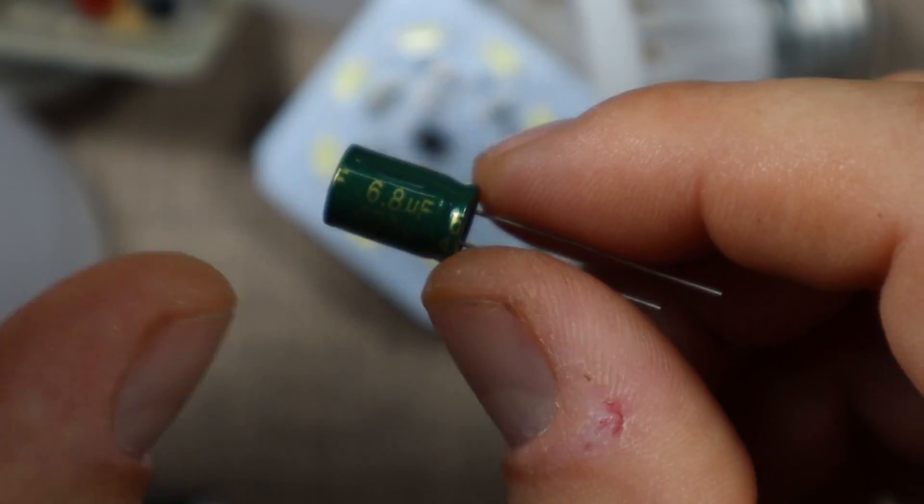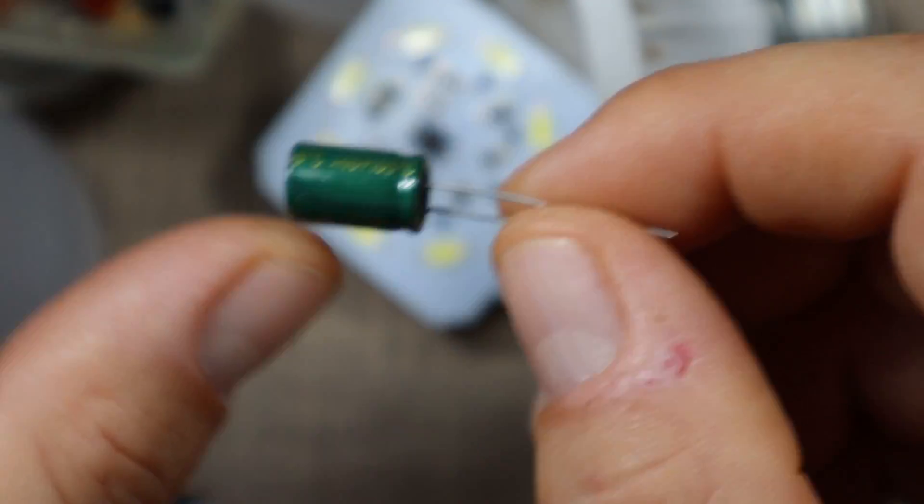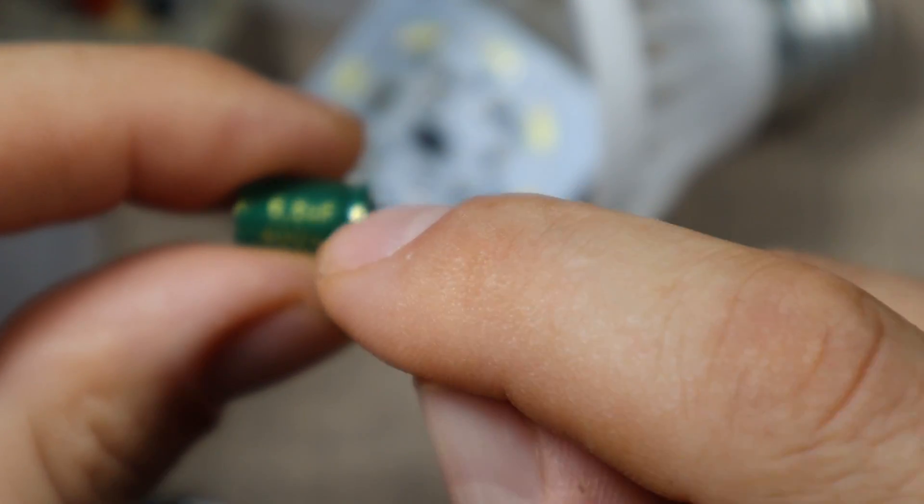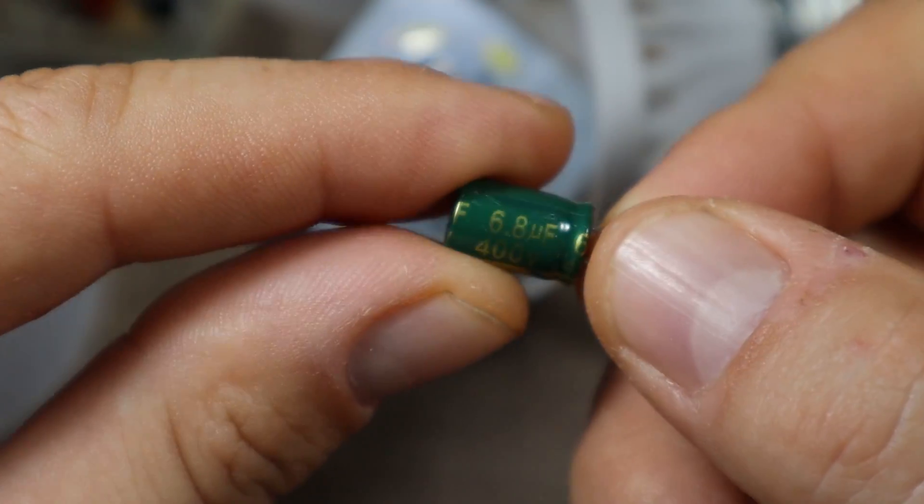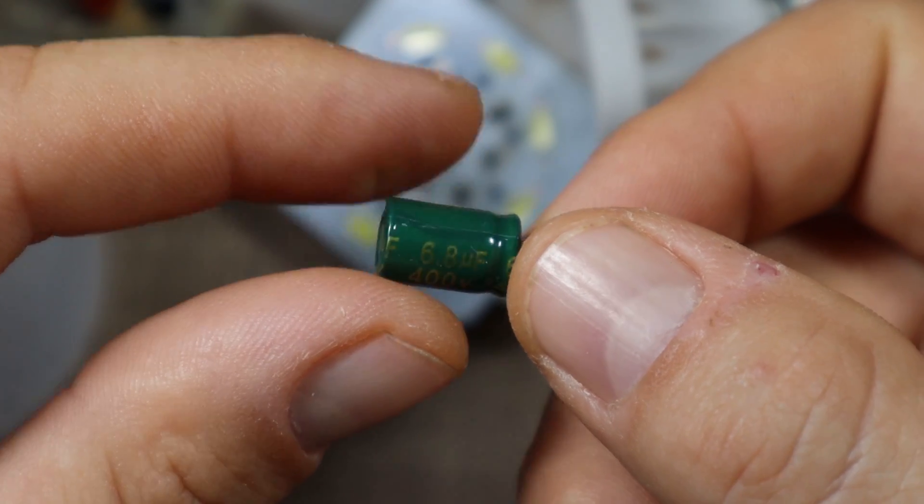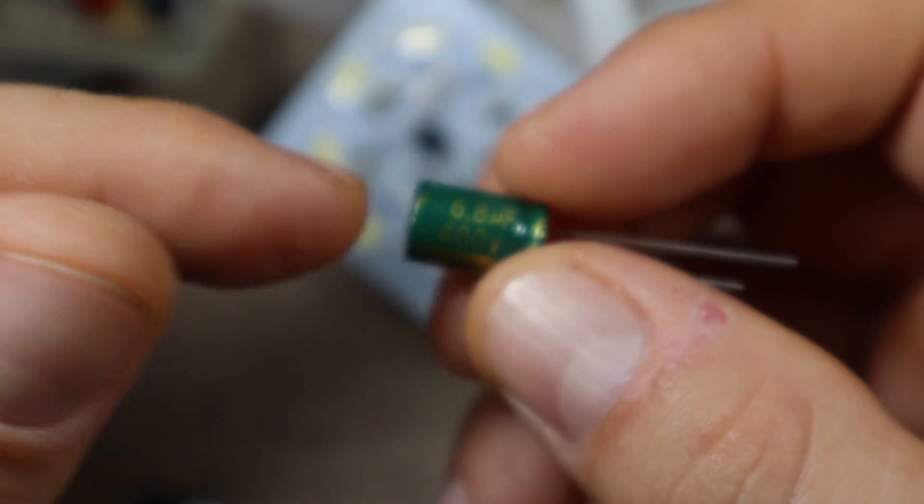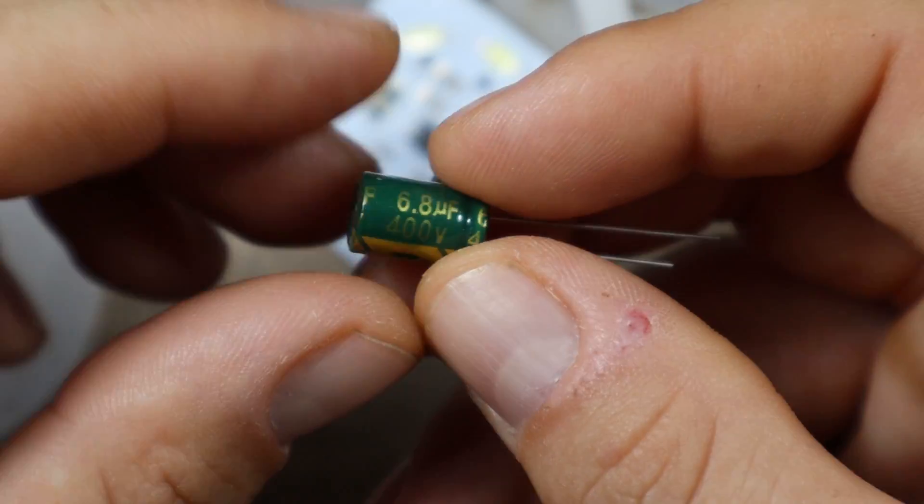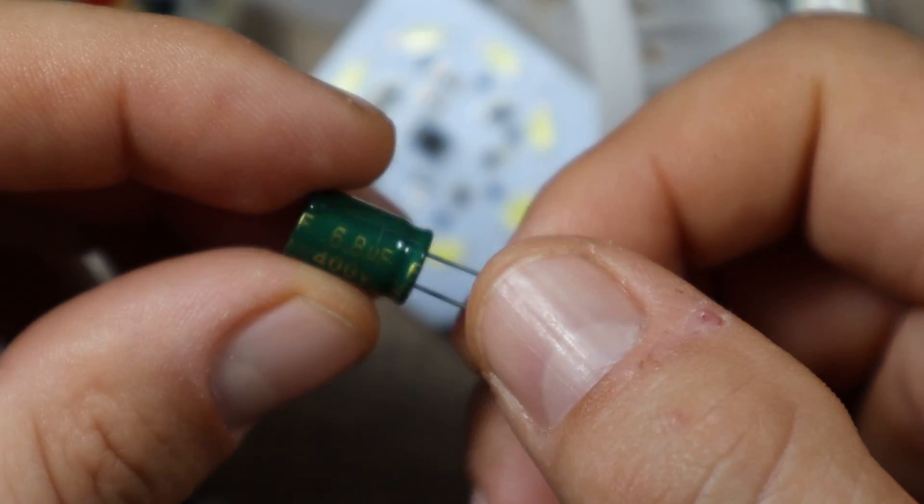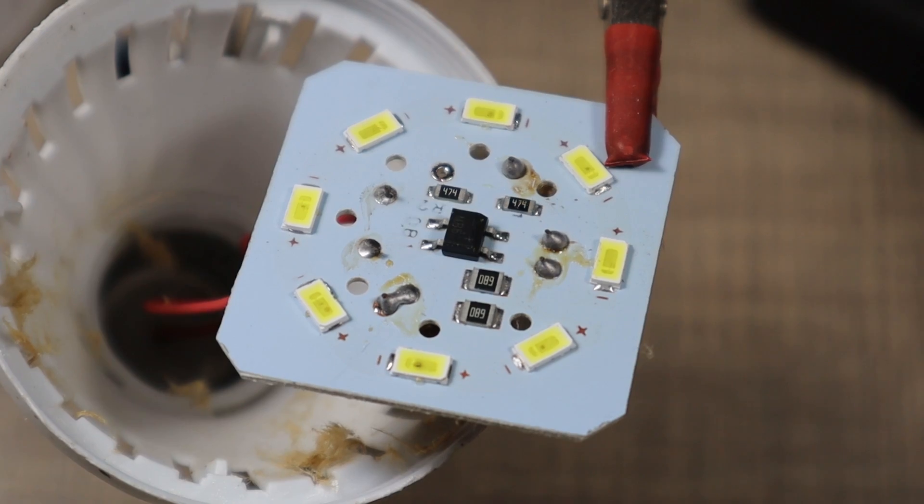We'll see how the lamp behaves afterwards. I'm guessing that there might be a slight flicker from the LEDs once we replace them with a smaller value capacitor, but I don't think it will be anything major or noticeable.